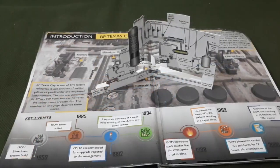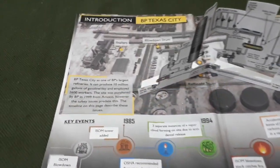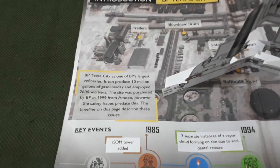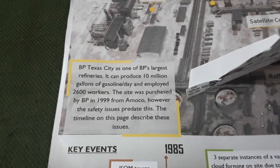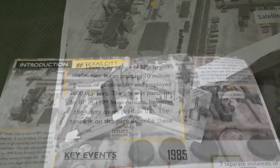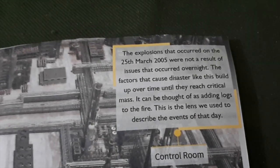The first paragraph shows a brief introduction to the site, emphasizing the size of the plant. The second paragraph talks about the impact of small failures leading to a large catastrophe.